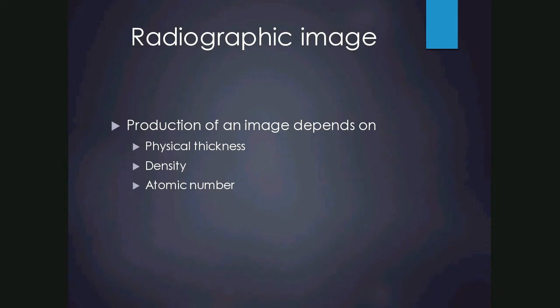The production of a radiological image depends on physical thickness in centimetres and millimetres, density — for example, air is less dense than fluid which is less dense than solids — and atomic number: soft tissue has a lower atomic number than bone, and bone has a lower atomic number than metal. Please revise these in the introductory section on physics.